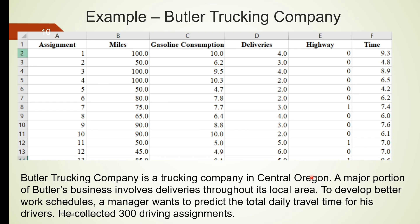Let's take a look at one example. Butler Trucking Company is a trucking company in central Oregon. A major portion of Butler's business involves deliveries throughout its local area. To develop better work schedules, a manager wants to predict the total daily travel time for his drivers. He collected 300 driving assignments. What's shown on this screen is a screenshot of the Excel spreadsheet provided by this trucking company. There are several pieces of information, also known as variables here. Each variable is represented using one column. The first column is the assignment number, starting from 1 all the way to 300. The second column is miles or distance driven, measured in miles. For example, the first assignment involves a total of 100 miles of driving.